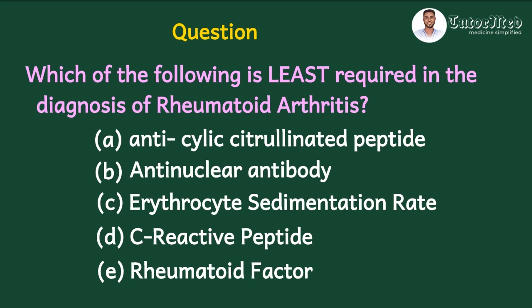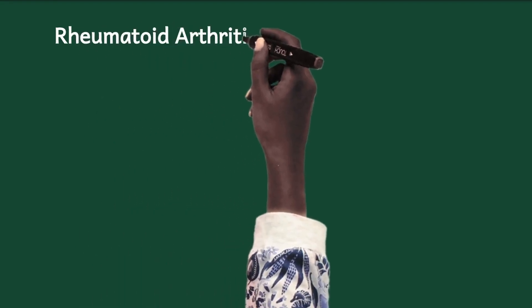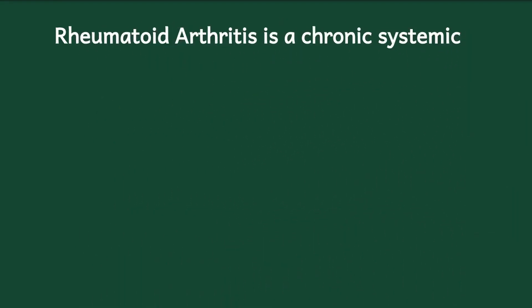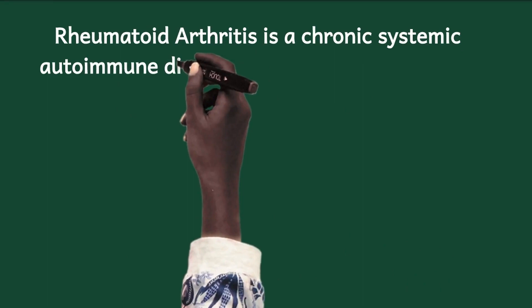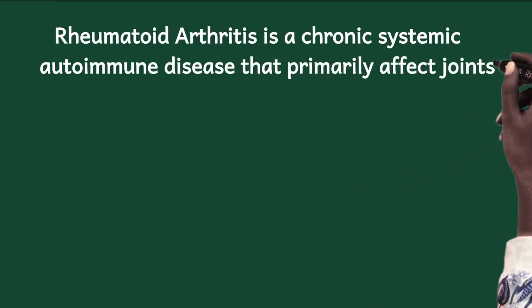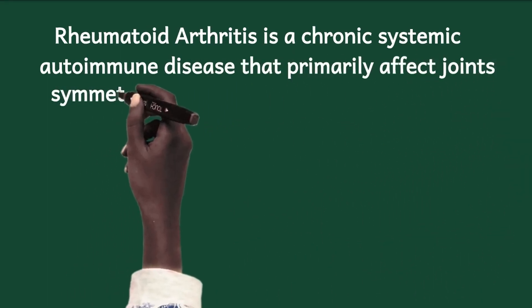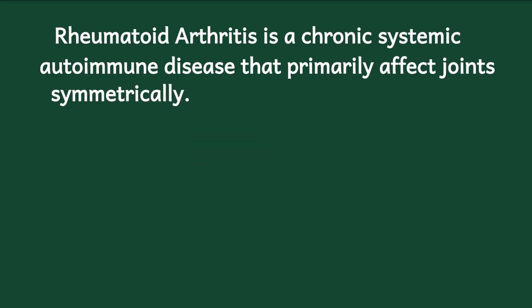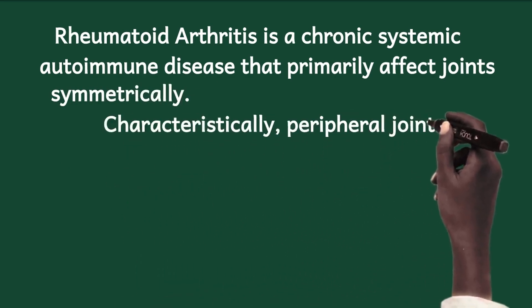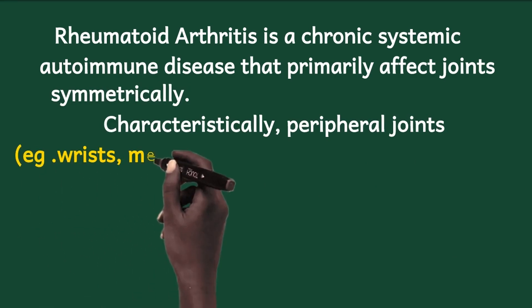Do you have your answer? Good — hold on to it and let's see what the literature says. First of all, in a few sentences, let's see what rheumatoid arthritis is. Rheumatoid arthritis is a chronic systemic autoimmune disease that primarily affects joints symmetrically, and characteristically peripheral joints — for example, the wrist joint.